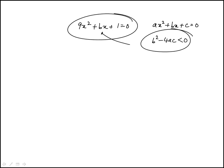So we're going to apply this condition to here. b is b and then a here is 9 and c is 1. So this is b squared is less than 36, and with these types of inequalities,